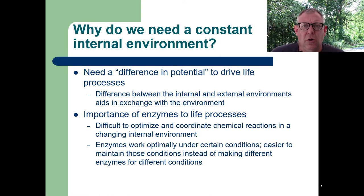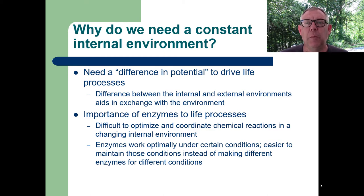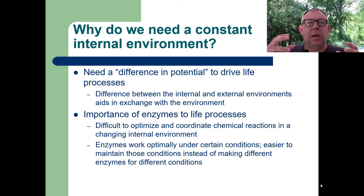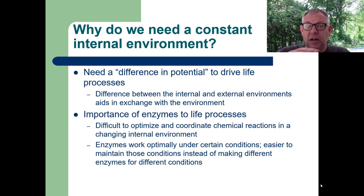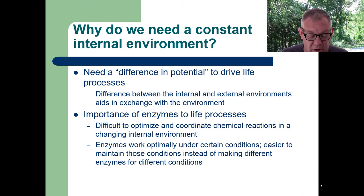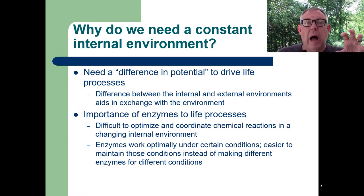It's easier to maintain those conditions than to make separate enzymes for each condition. Enzymes work well at body temperature, 37°C. If your body heats up too much, those enzymes denature and don't work. If you get too cold, those enzymes don't work well either. You can't get a protein that works at all different temperatures because temperature affects shape so much. You could produce different enzymes for different temperatures, but it's much more efficient to just maintain a constant internal environment. Then all your enzymes can be selected for that environment, and that's how it's worked through evolutionary time.